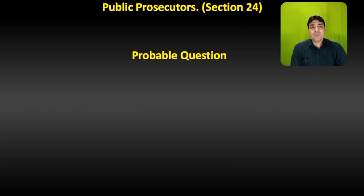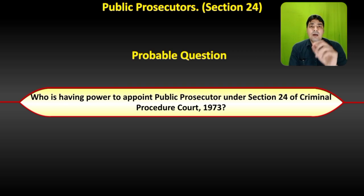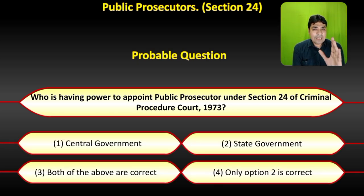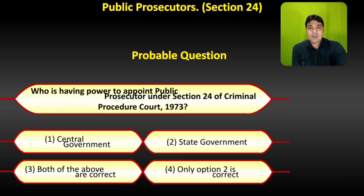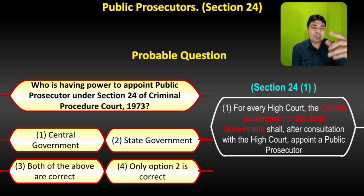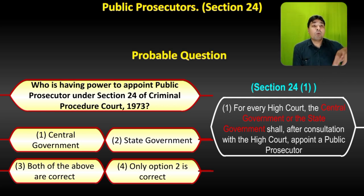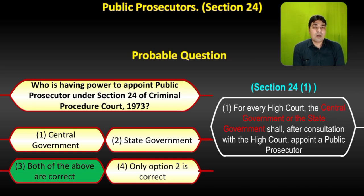Probable question on section 24: Who is having the power to appoint a Public Prosecutor under section 24 of the Criminal Procedure Code 1973? Options: Central Government; State Government; Both of the above; Only option 2. The answer is option 3 — both Central Government and State Government have the power to appoint a Public Prosecutor for the High Court.